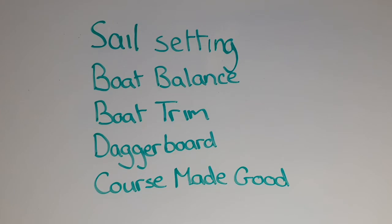Sail setting includes all sail controls: mainsheet, outhaul, downhaul, and kicker. These all affect the shape of the sail, and different shaped sails work better for different points of sailing.